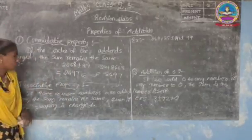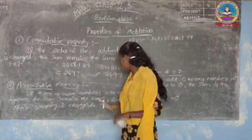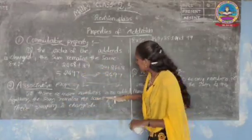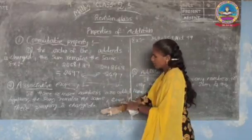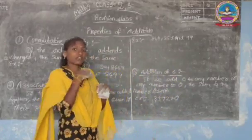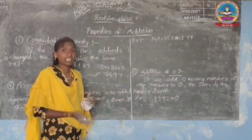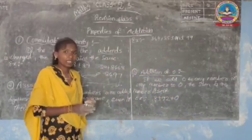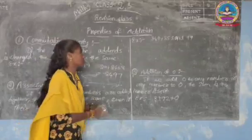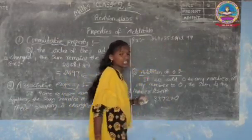What is the associative property? If three or more numbers are added together, the sum remains the same even if the grouping is changed. If three or more numbers are added together differently by grouping, we get the same sum. Let us see the examples: 340, 253, and 99.